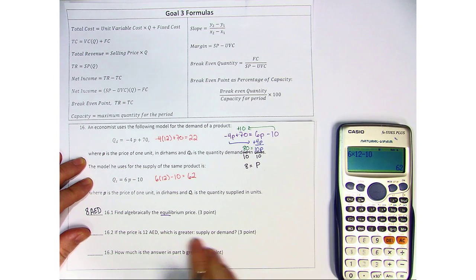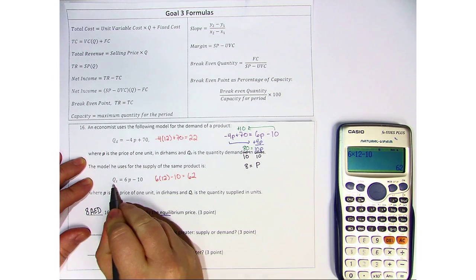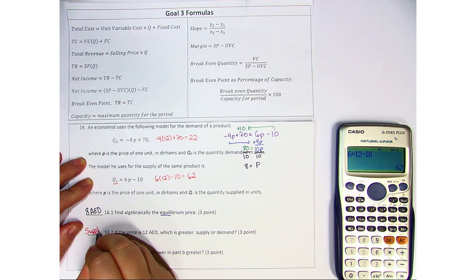So if the price is 12, which is greater, supply or demand? In this case, it is supply.